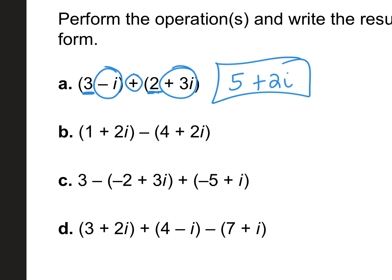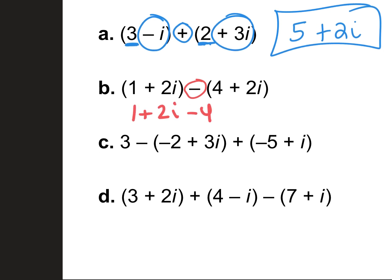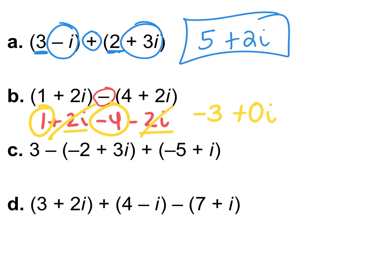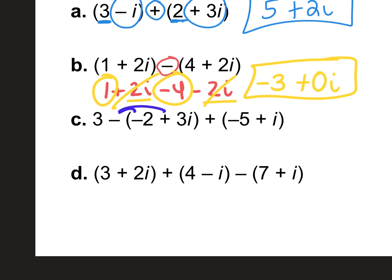Imaginary goes with imaginary. For the subtraction problem, when you subtract a polynomial, you distribute the negative sign. Rewrite it as 1 plus 2i minus 4 minus 2i. Real with real: 1 minus 4 is negative 3. Imaginary with imaginary: positive 2i and negative 2i cancel to zero. So your answer is negative 3. You can write plus 0i if you want, but leaving it as negative 3 is fine. Now for the next one: I have 3 minus a negative, which becomes plus 2 minus 3i, minus 5 plus i.